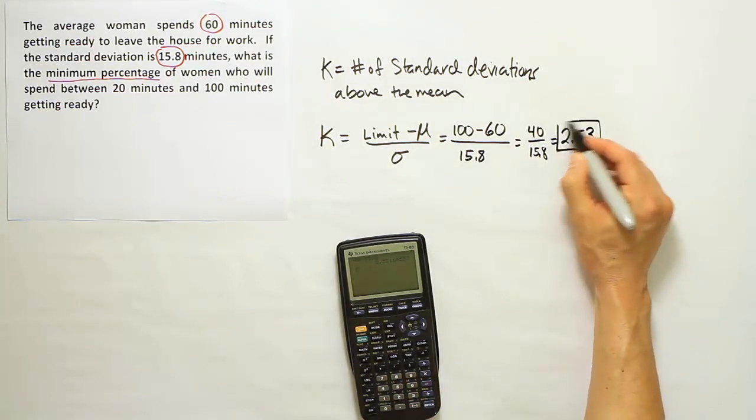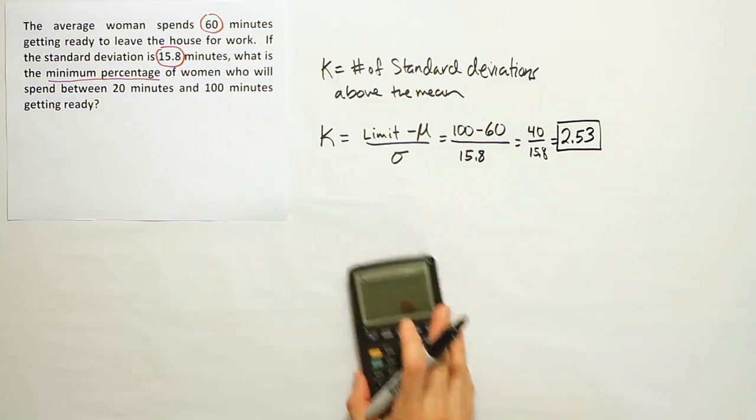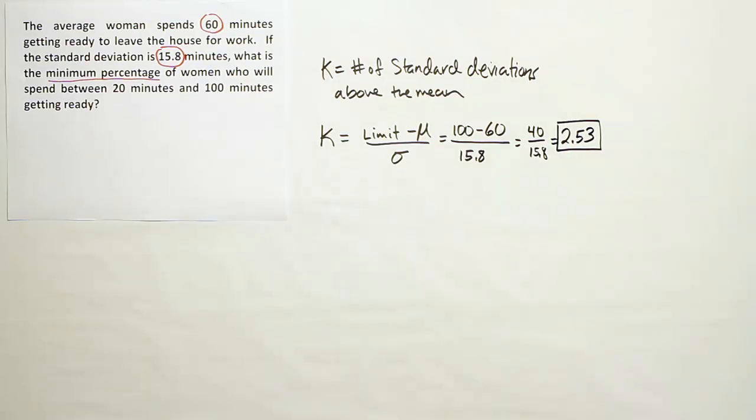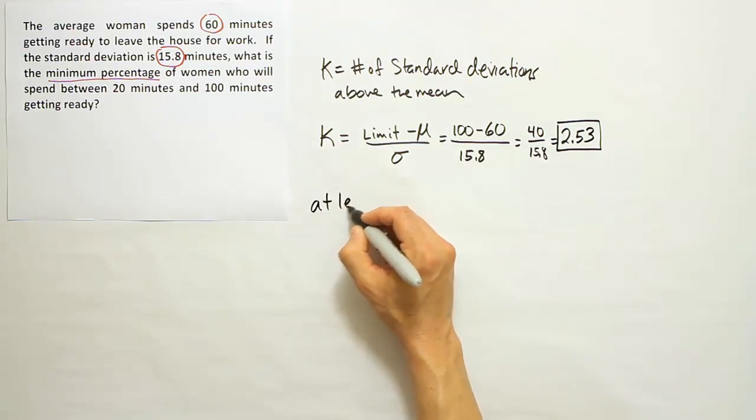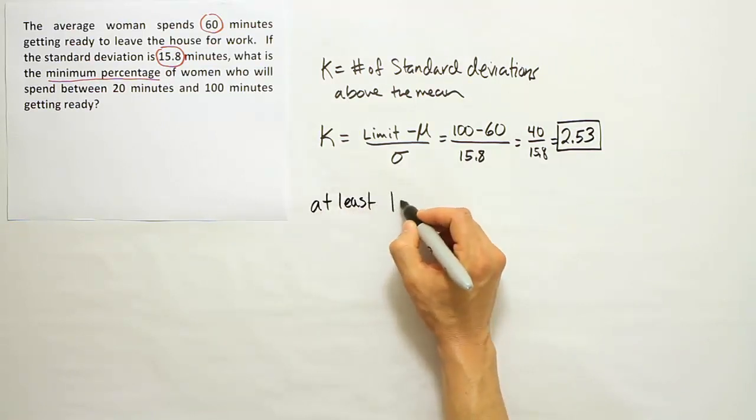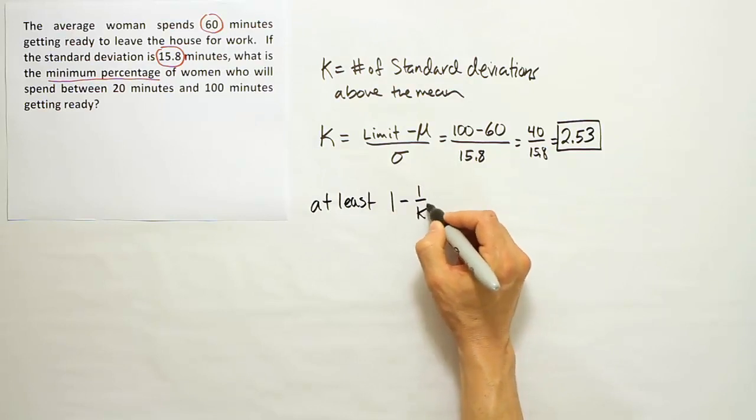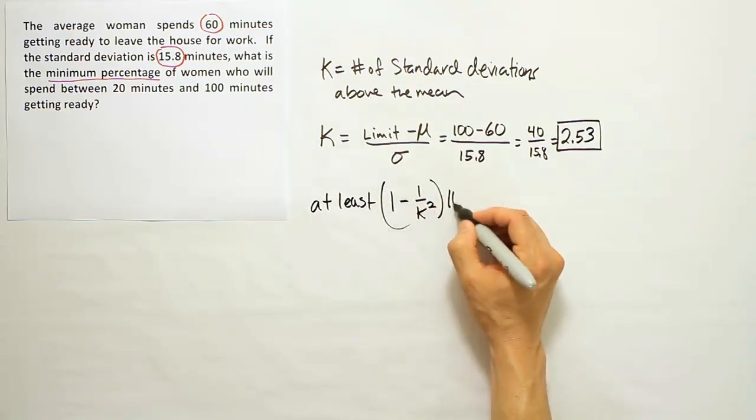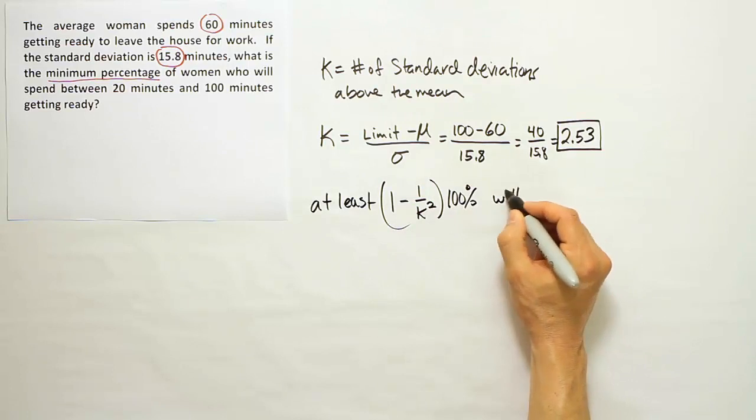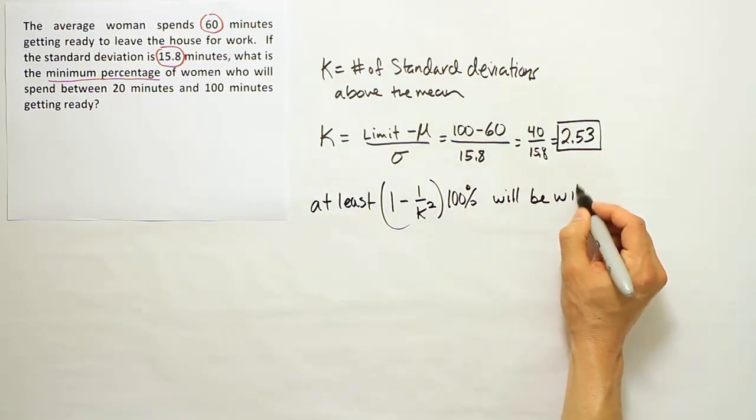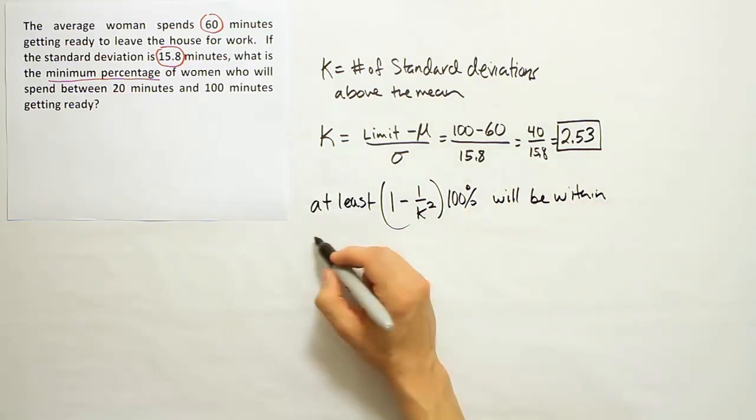Okay, so 2.53 is my k. Now, if I take that and plug it into the following formula, at least 1 minus 1 over k squared times 100% will be within the interval.